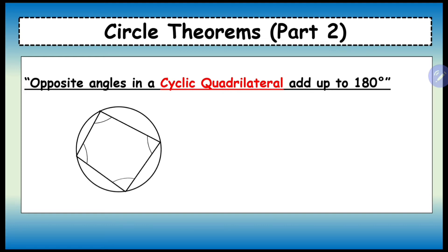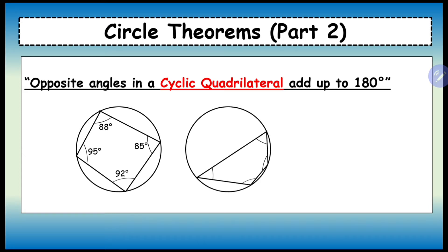So here's a cyclic quadrilateral: if that angle is 85, the opposite angle is 95, and both when added together equal 180 degrees. If that is 88, the one opposite is 92 — if you add them both together they equal 180 degrees.